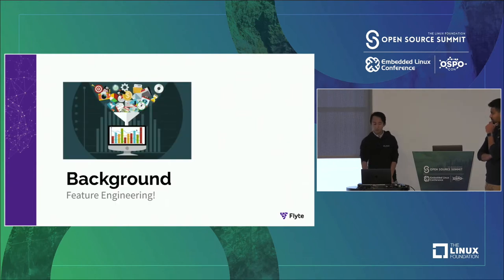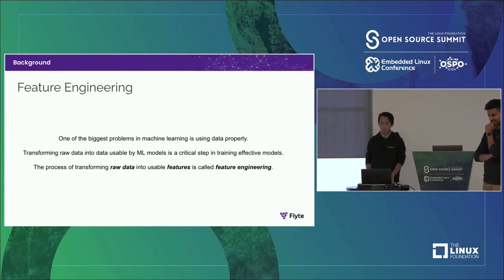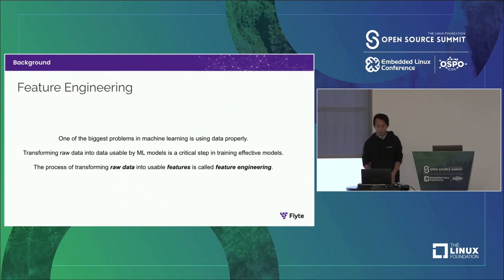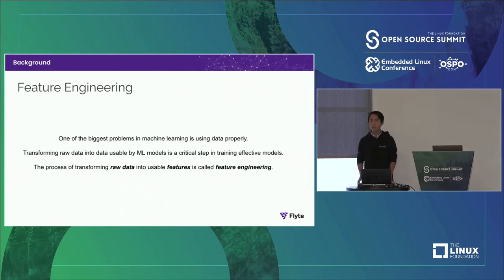For a bit of background — most folks here are probably relatively aware of what feature engineering refers to. To give a quick recap: one of the biggest problems today in machine learning is how to use data properly. In particular, transforming raw data into data that's actually usable by ML models is one of the keys to effectively training machine learning models and putting them into production. We call this process feature engineering.